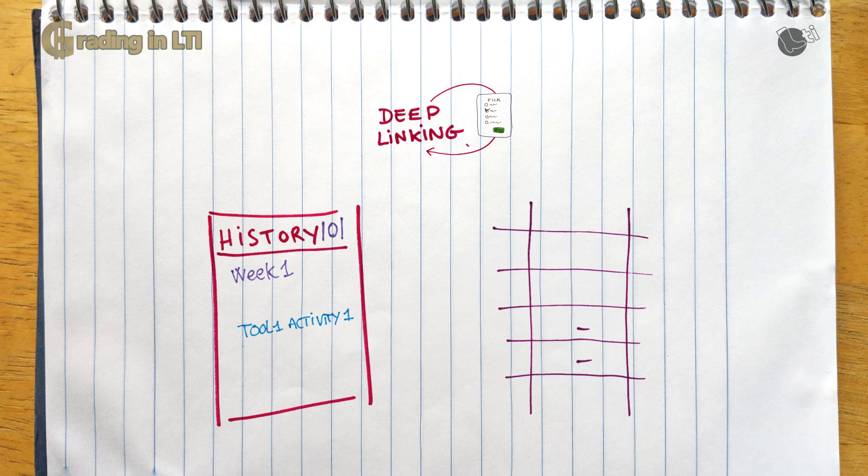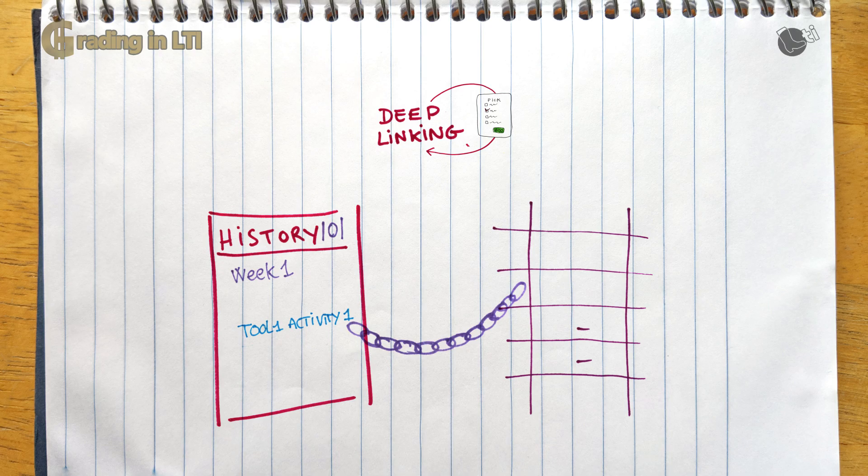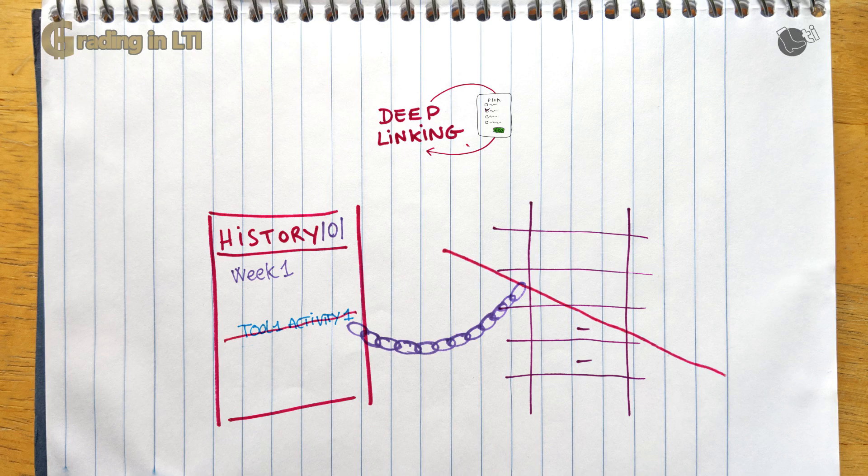Now the platform will know that this line item, this gradebook column, is associated to that LTI resource link. We can say it's a coupled line item because it's coupled between the link and the gradebook column. Usually a platform will tie the lifecycle of that line item to the resource link. If you remove the resource link, the platform may decide, for example, to remove the associated line item for it.